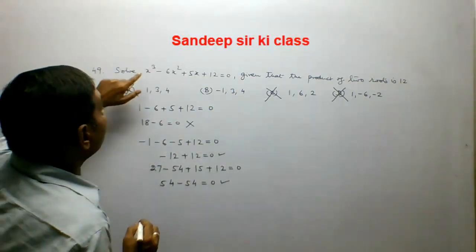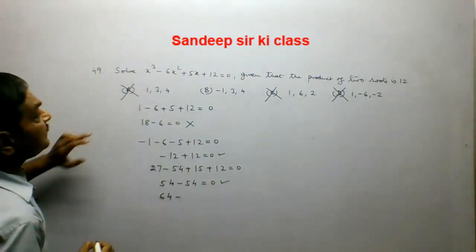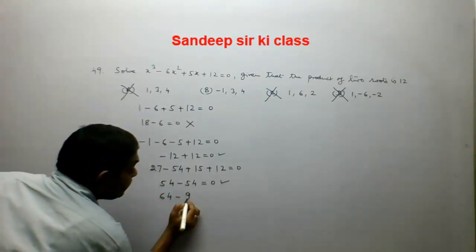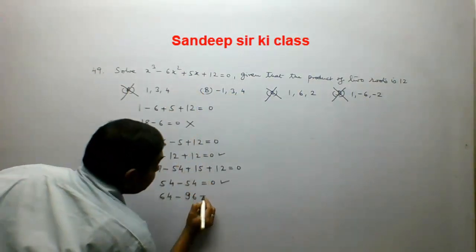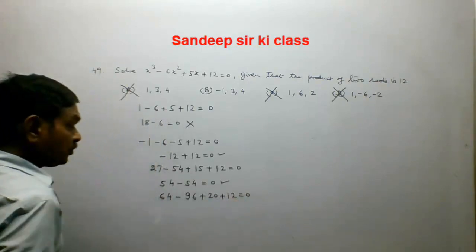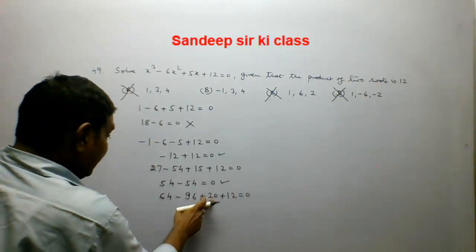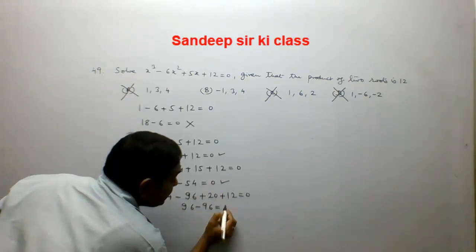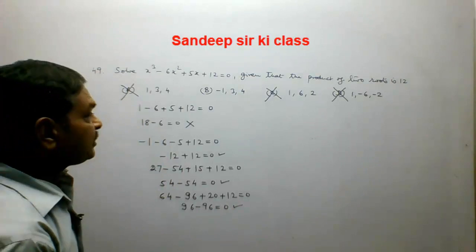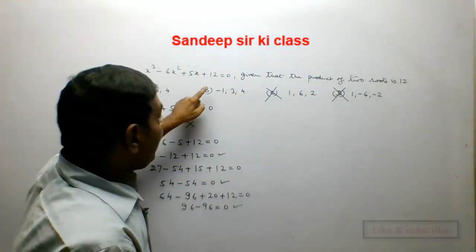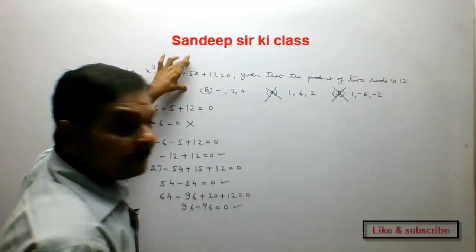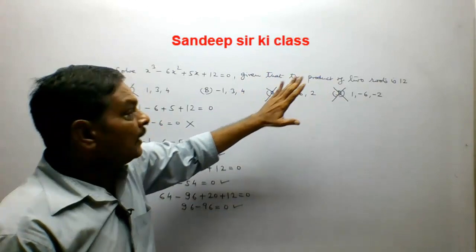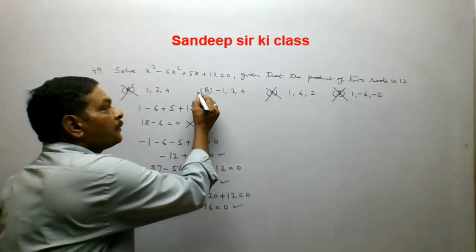Now putting x = 4: 64 minus 6 times 16 plus 5 times 4 plus 12 equals 64 minus 96 plus 20 plus 12 equals 96 minus 96 equals 0. So 4 also satisfies the equation. All three roots -1, 3, and 4 satisfy the given equation, and the product condition is met. Option B is the correct answer.